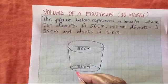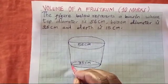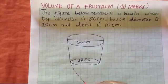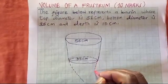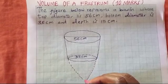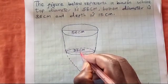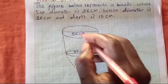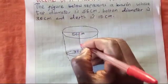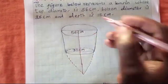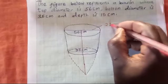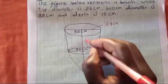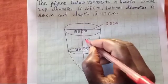We are working out the volume of our first frustum, and in this case we need to extend the bottom part like this and join with the other side. We have the bottom radius and the top radius. The radius at the top is 28 centimeters, and at the bottom it is 17.5 centimeters. The depth is 15 centimeters.